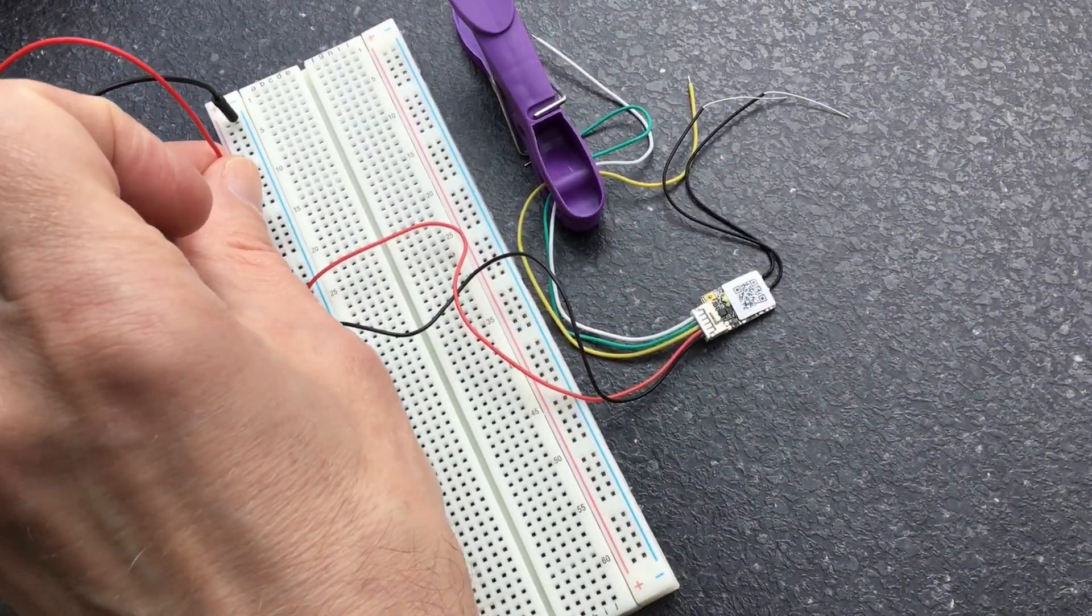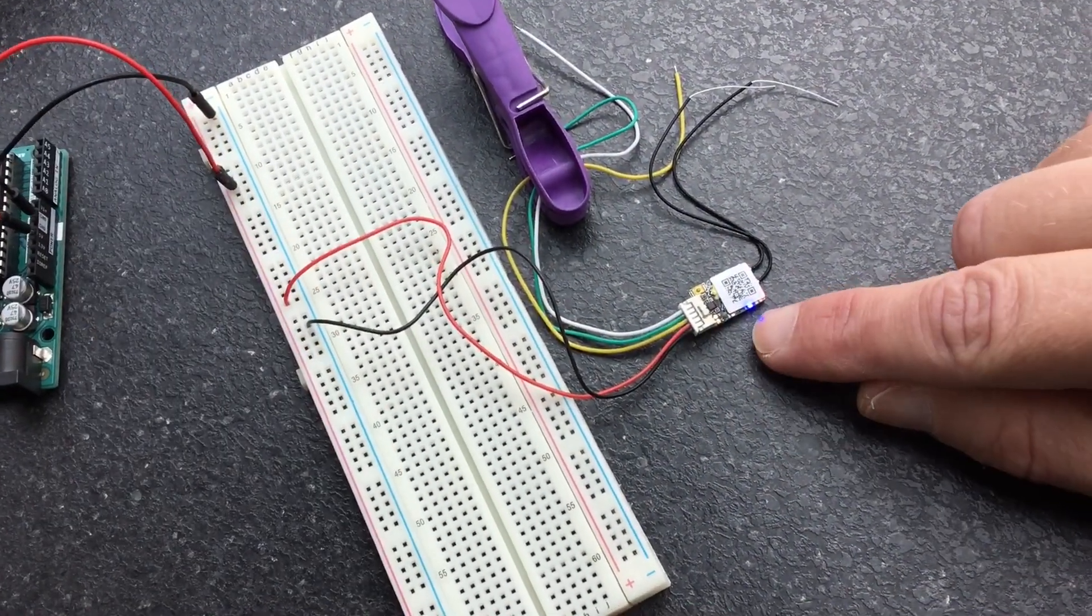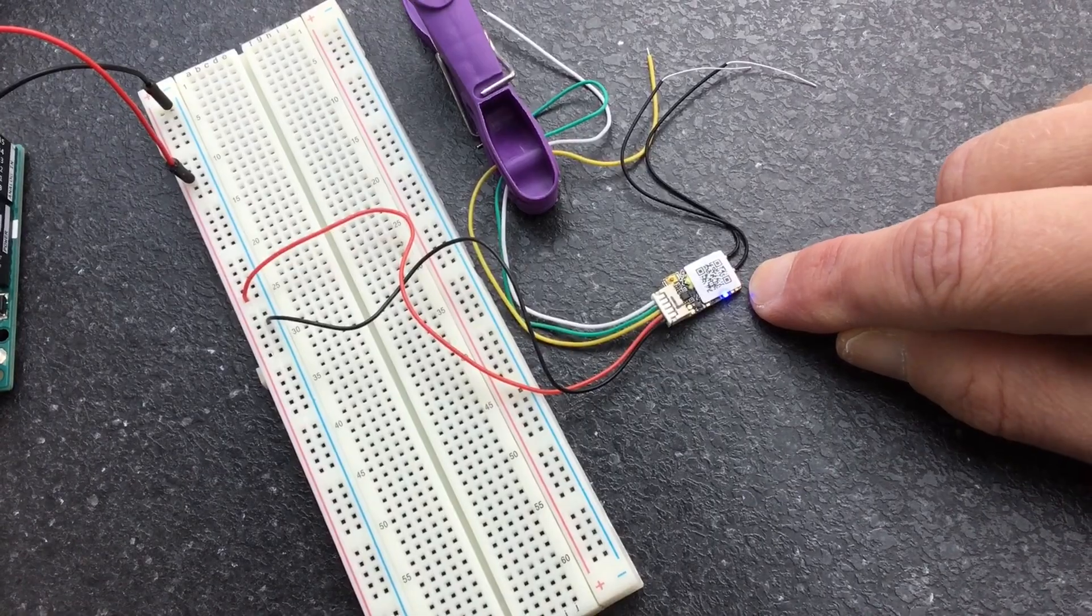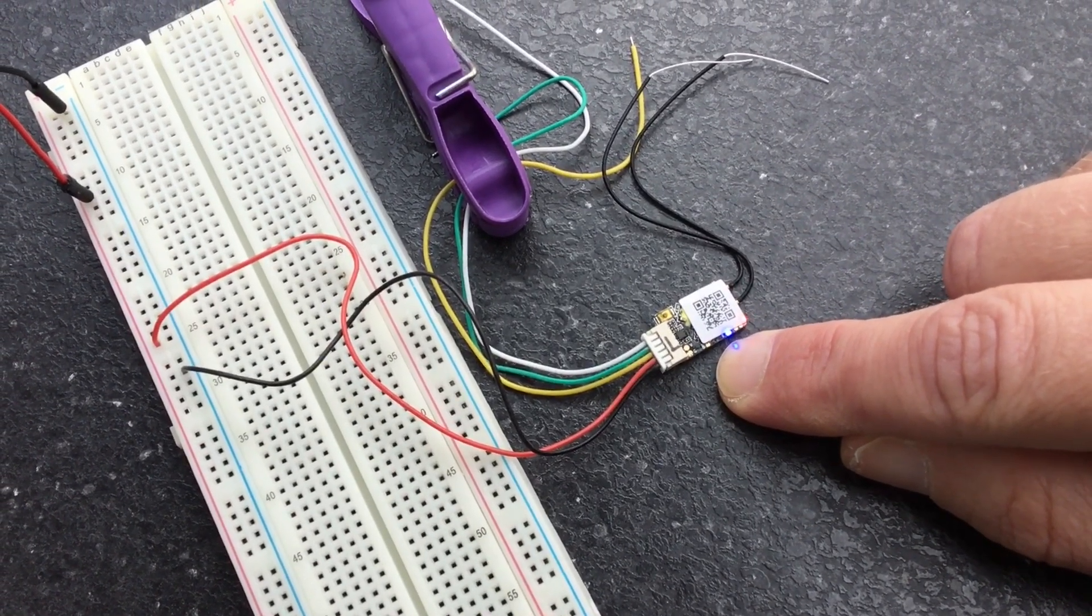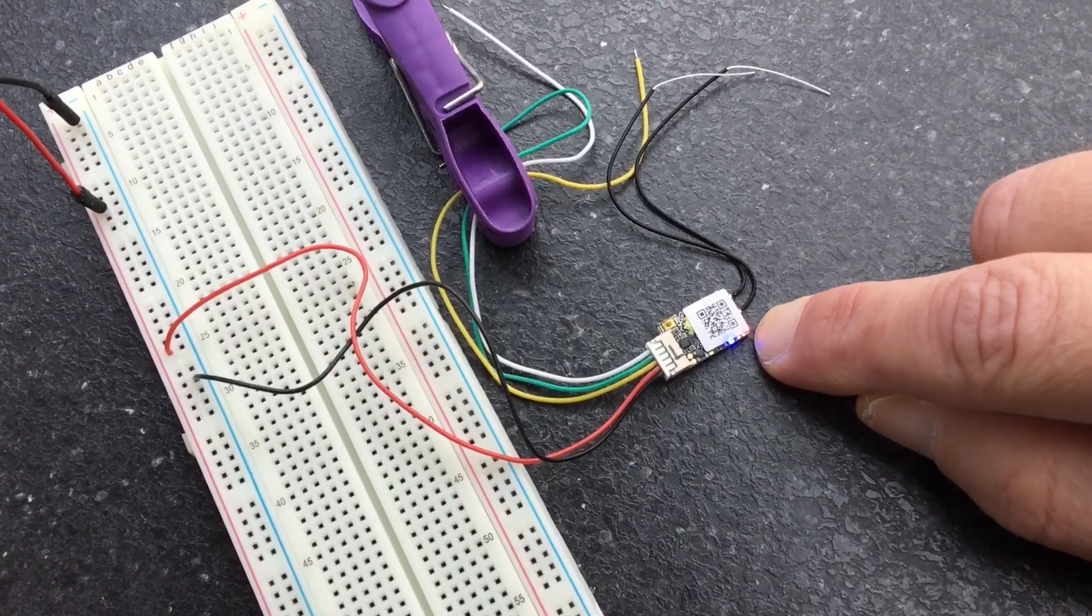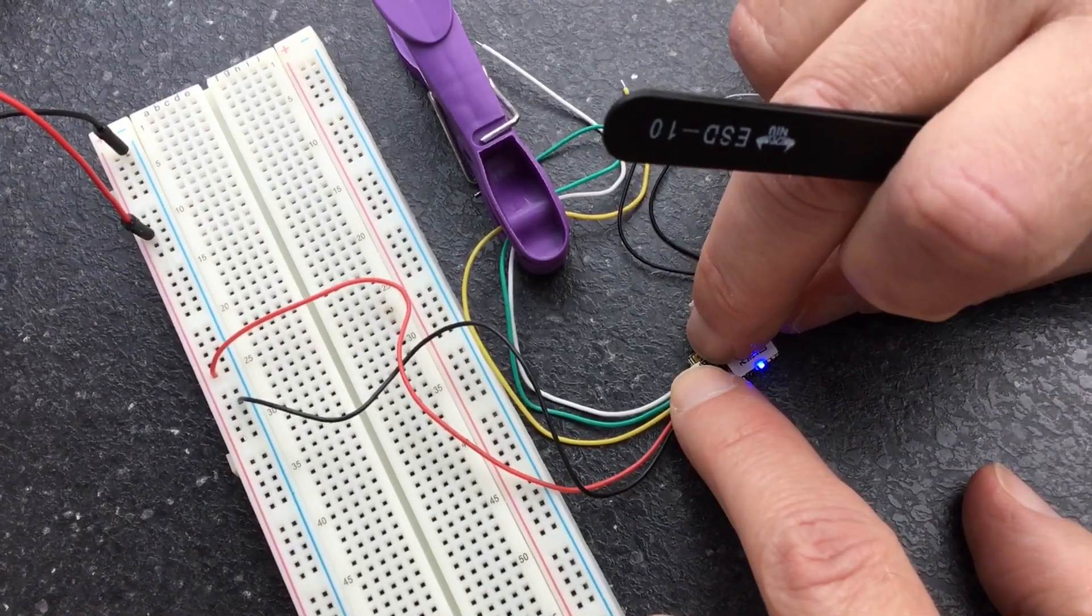Now, if I power it up, you'll see that I've got blue light on and red flashing. The blue light indicates that it's in S-Bus mode and the flashing red means that it's not bound.